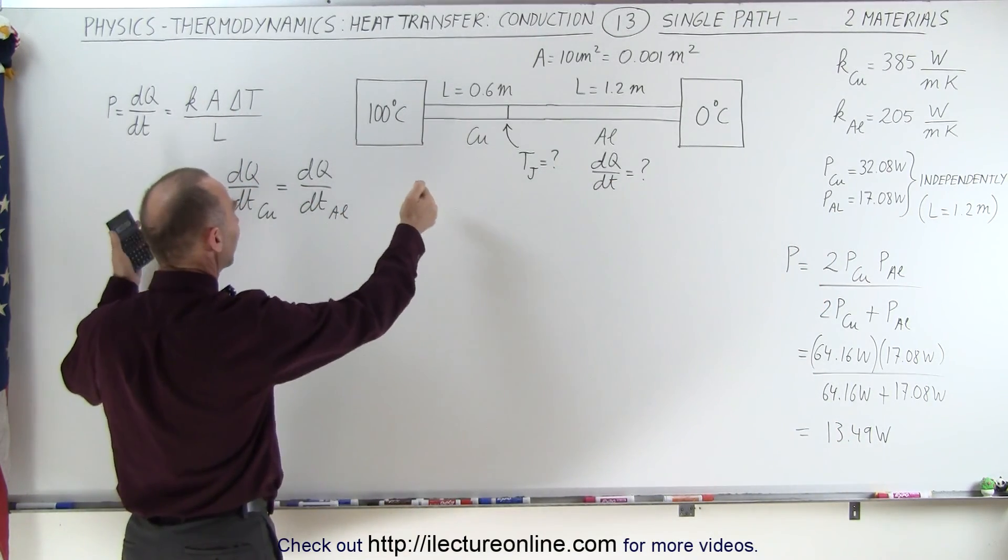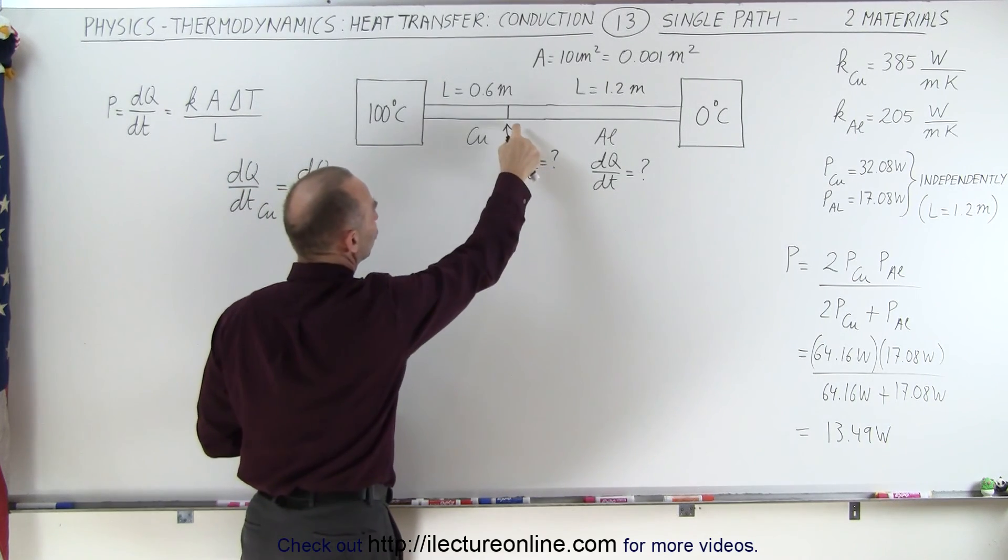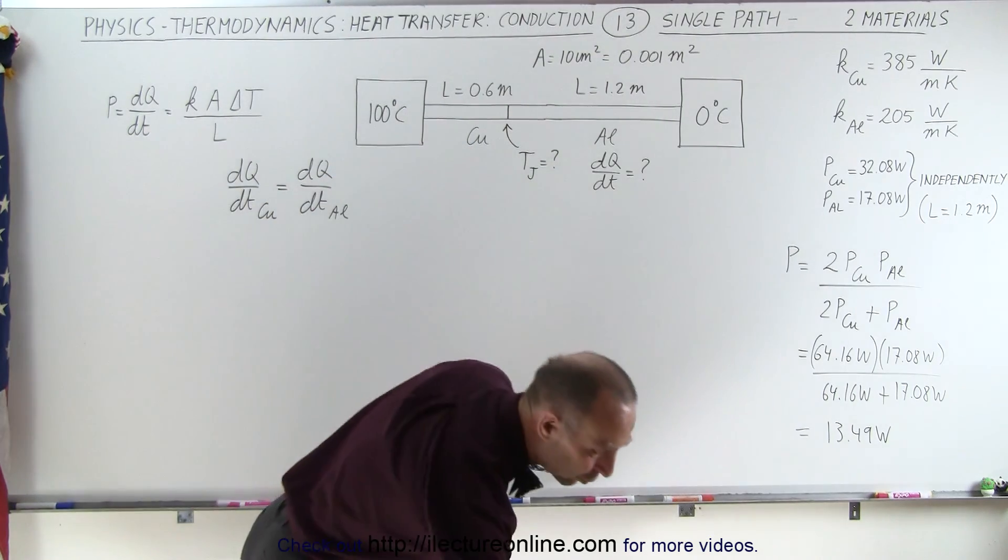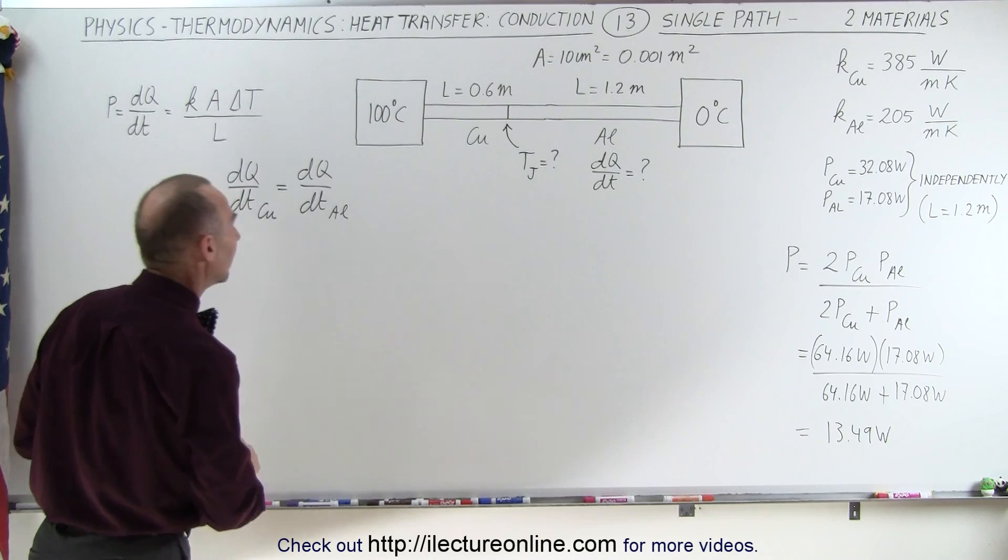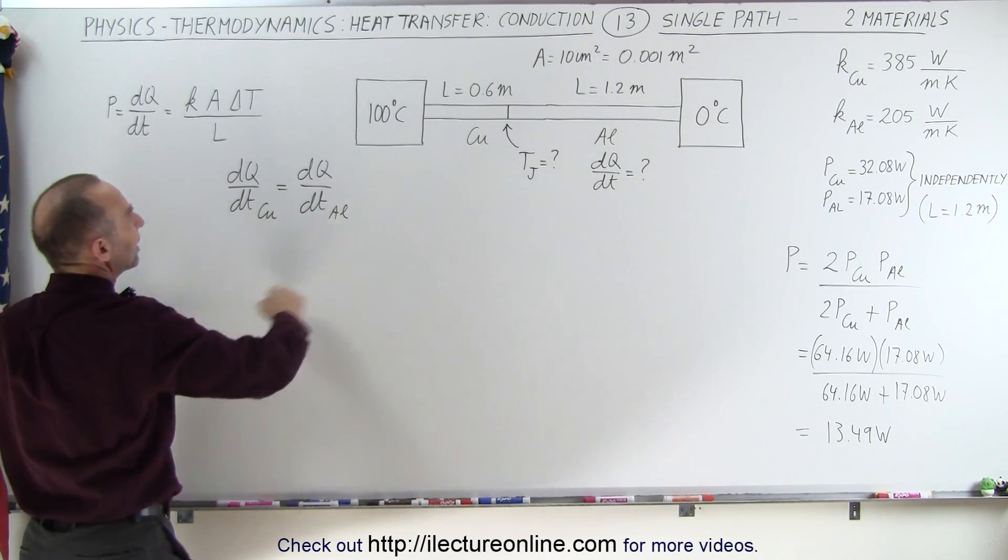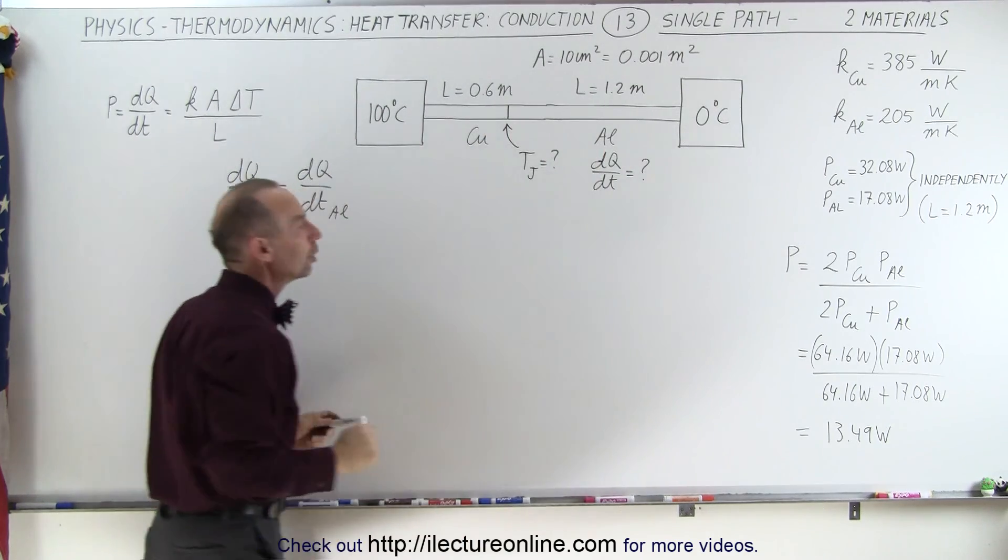We're going to solve this in the same fashion as before, the more traditional fashion, by first finding the junction temperature between the two sections and then calculating the transfer of heat to the two metals. All right, so we start with the same principle: whatever heat transfers to the copper section must be the same as the heat transferred through the aluminum section.